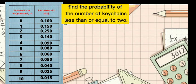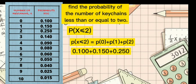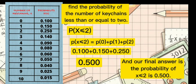To get this, we need to start at 2 and end at 0. We need to get the corresponding probability. P(X ≤ 2) equals P(0) plus P(1) plus P(2). Then substitute: 0.1 plus 0.150 plus 0.250. Add, and the answer is 0.5. The final answer is P(X ≤ 2) equals 0.5.